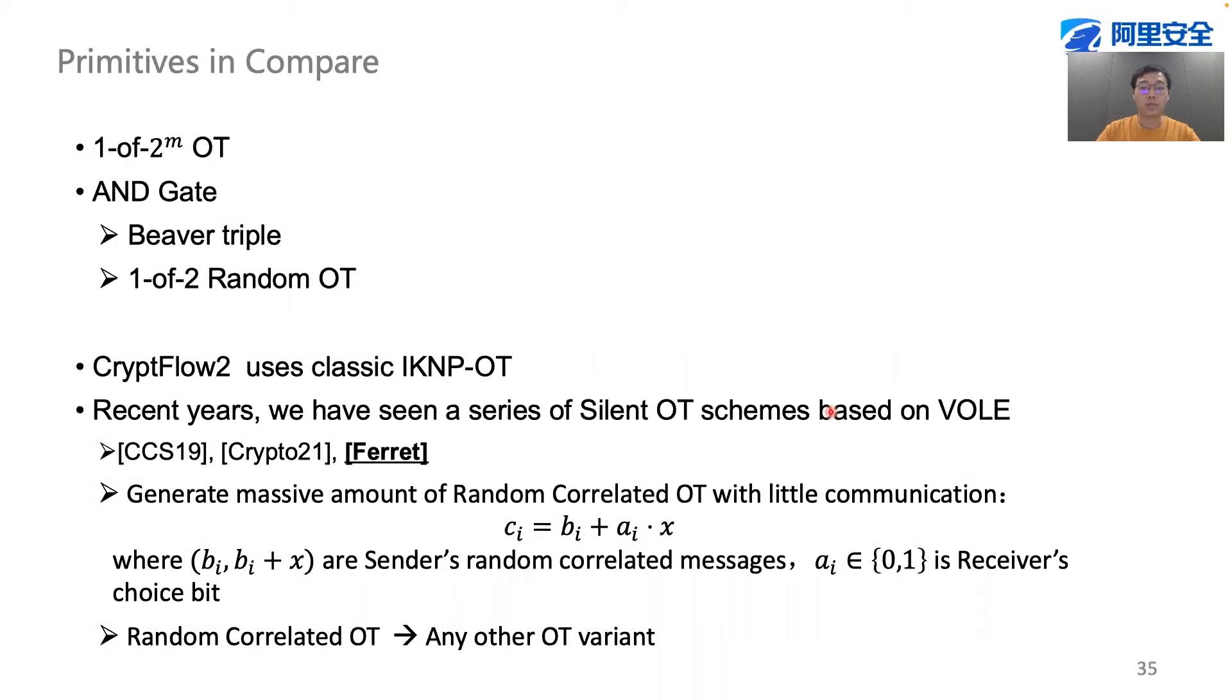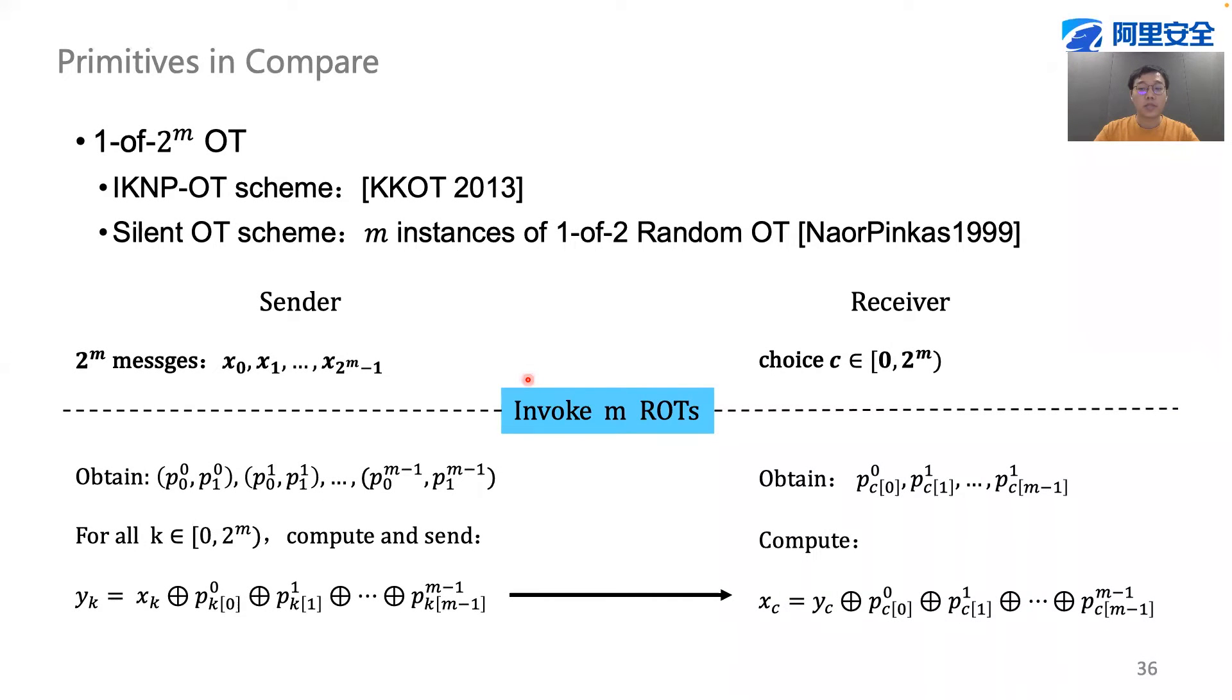We further optimize the performance by using recent progress in oblivious transfer, where a series of silent OT schemes based on VOLE have been proposed. These OT schemes can generate massive amount of random correlated OT with little communication. This is very different from the classic IKNP OT.